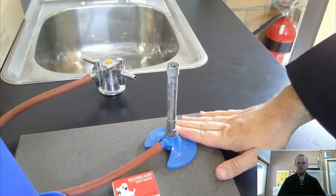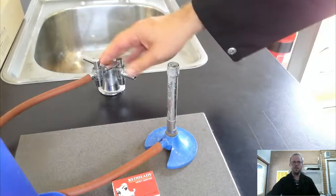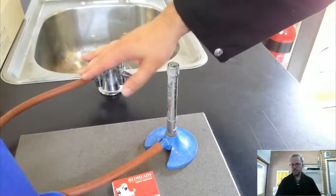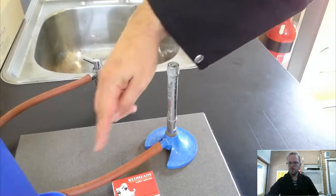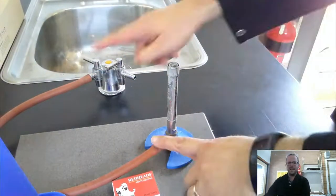So here we have the Bunsen burner. On the benches that we use, we have gas taps which our Bunsen burner will connect to. You can see that it's got here a rubber hose that connects from the Bunsen burner here all the way to the gas tap over here.